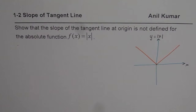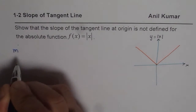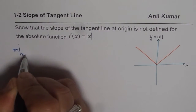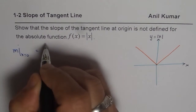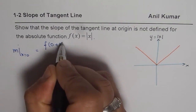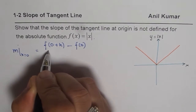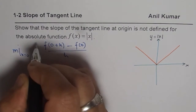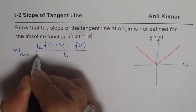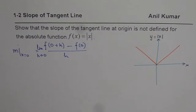We will use the difference quotient method to find the slope of the tangent line. The slope of the tangent line at x = 0 is defined as the limit as h approaches 0 of [f(0 + h) − f(0)] / h. That is the definition of slope at any given point.